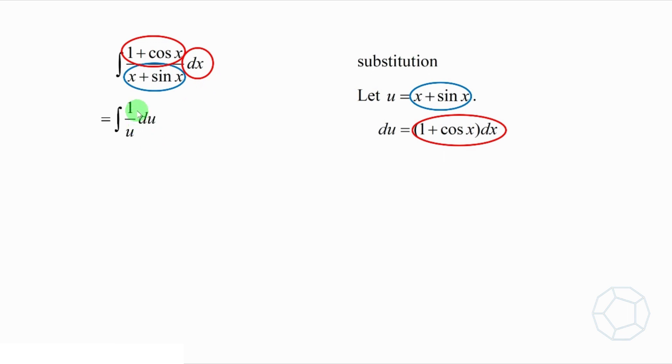Then it is equal to integrate 1 over u du, which is equal to log absolute u plus C, where C is a constant. We put the expression of u back. Then the answer is equal to log absolute x plus sin x plus C.